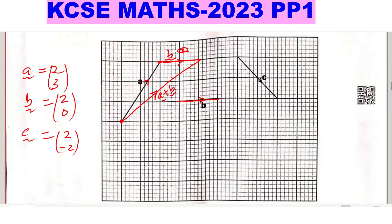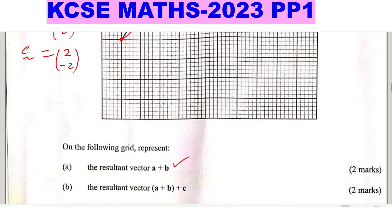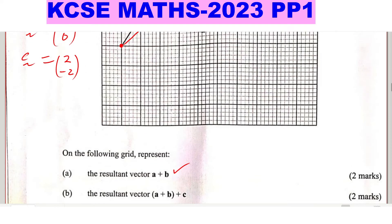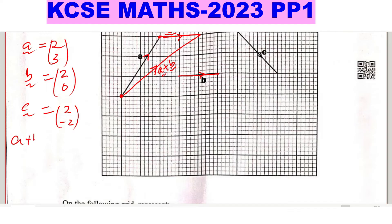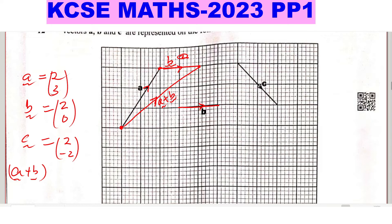That is the first part. The second part is the resultant vector A plus B plus C. We need to get A plus B first. Look at the displacement on the X axis to the right for A plus B — those are 4 squares, given by 4. Then upwards on the Y axis, those are 3 squares. So A plus B is given by column vector 4, 3.